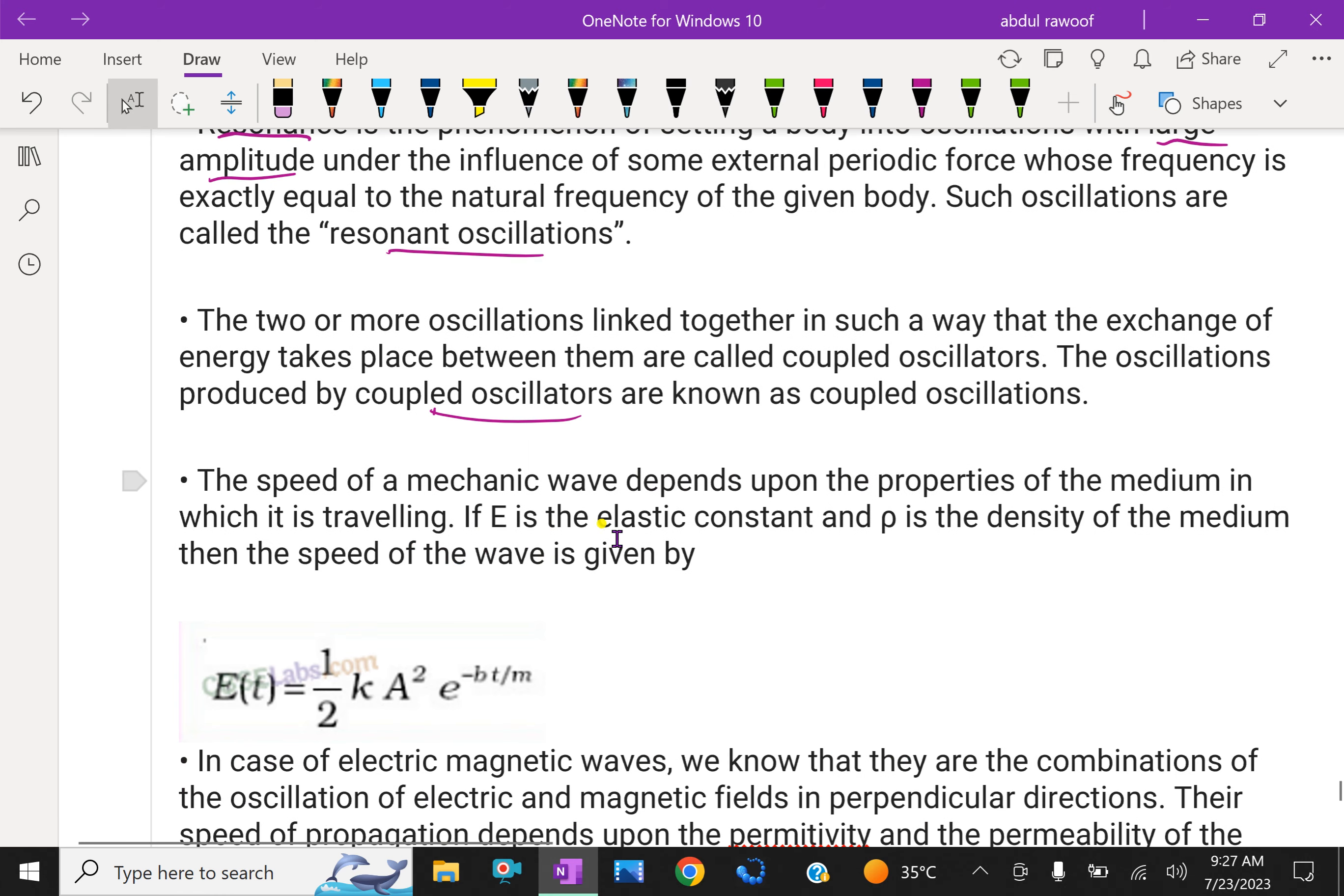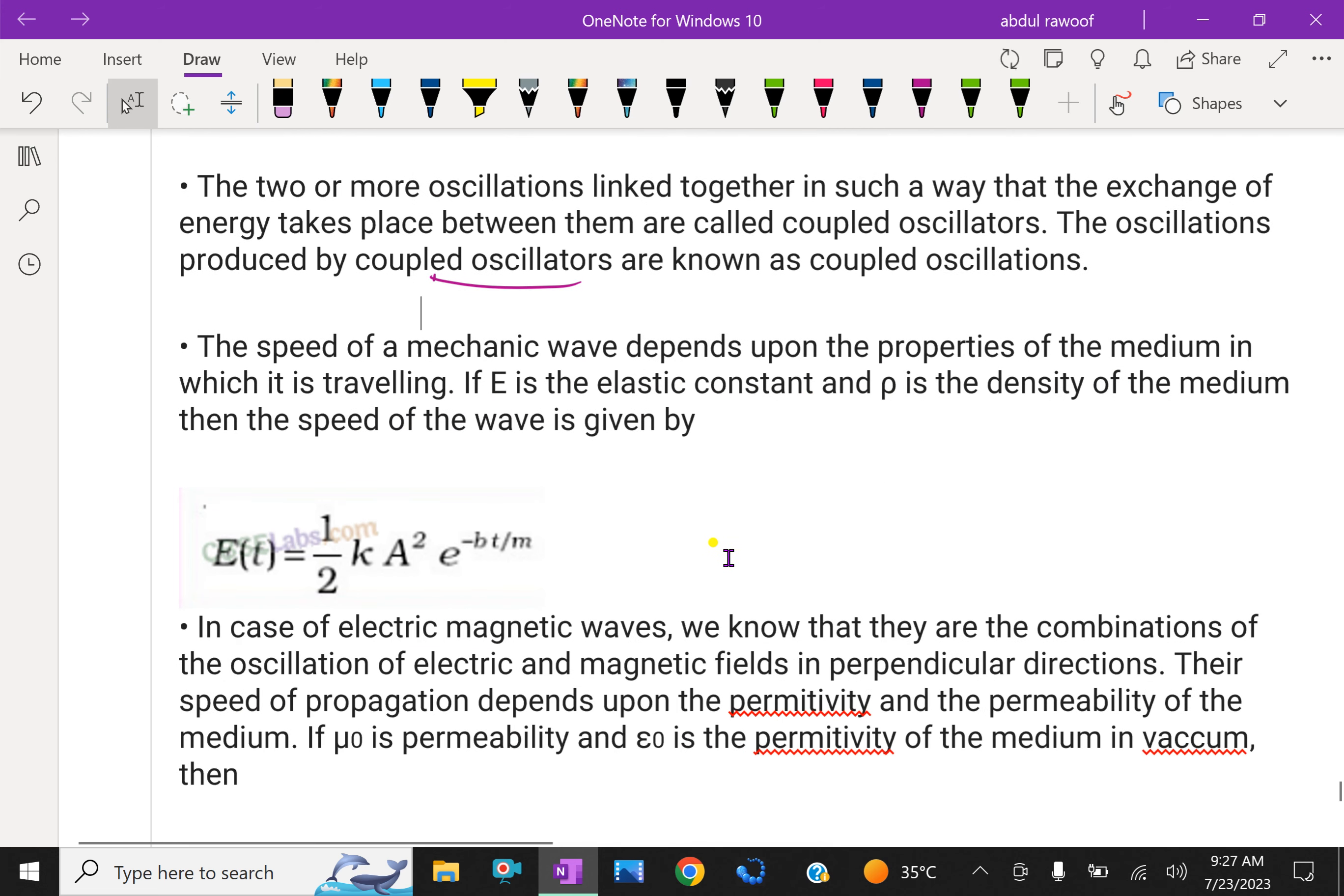The speed of a mechanic wave depends upon the properties of the medium in which it is traveling, where E is the elastic constant and ρ is the density of the medium. Then the speed of the wave is given by E(t) = (1/2)kA²e^(-Bt/M).